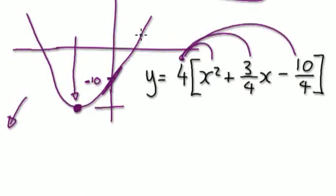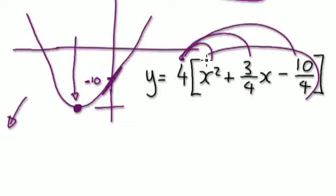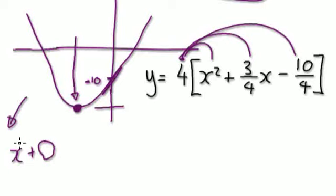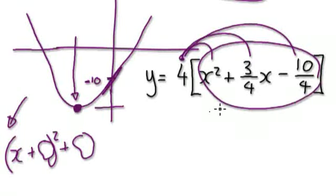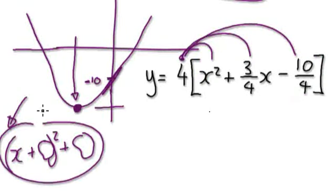The next step is a hard step. You've got to rewrite — zoom into this bit here — you've got to rewrite this in the form of x plus something, all squared, and then plus something. You've got to rewrite it in this form, because this form here is very useful.